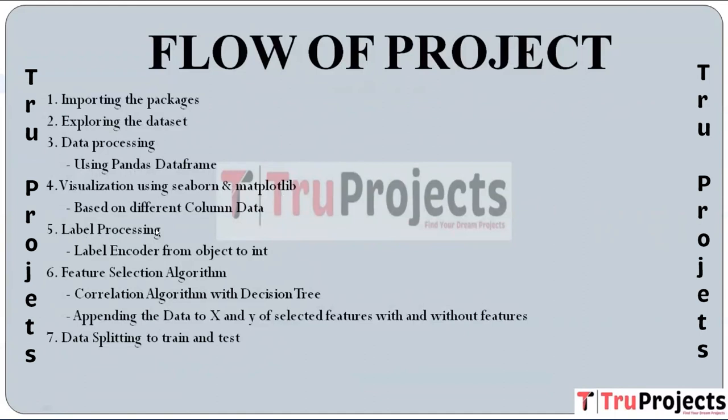Next, we have label processing — converting categorical labels, often in text form, into numerical values using a Label Encoder, which is typically required for machine learning models that need numeric input. Next is feature selection, selecting the most relevant features from the dataset using a correlation algorithm with decision trees to identify important features. Separate datasets X and Y are created with and without the selected features.